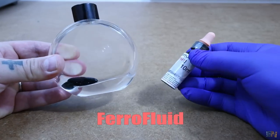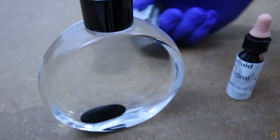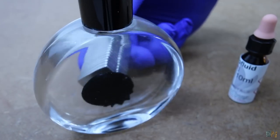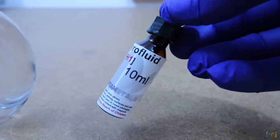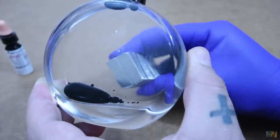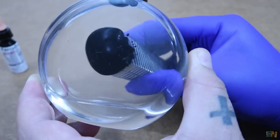This is called a ferrofluid, basically tiny nanometer-sized particles coated with magnetite and suspended in a transparent liquid. Since these are magnetic, we can attract the liquid with a magnet. Look how cool is that.